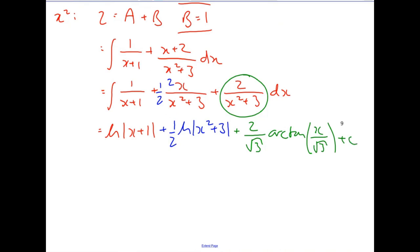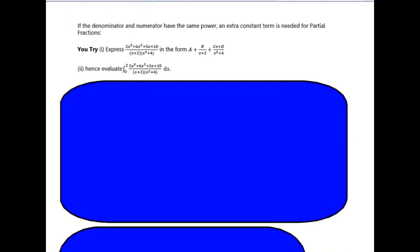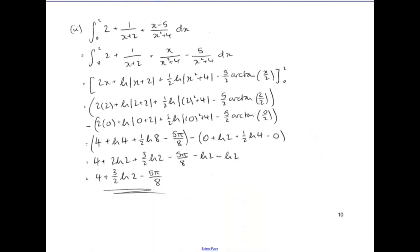There's a final question for you — pause the video and I'll reveal the answer. For the partial fractions you should end up with two plus one over (x plus two) plus (x minus five) over (x squared plus four). Integrating: two gives two x, one over (x plus two) gives ln|x plus two|, splitting the last fraction gives half ln|x squared plus four|, and the final term gives five over two times arctan(x over two). Substituting your limits gives the final answer.